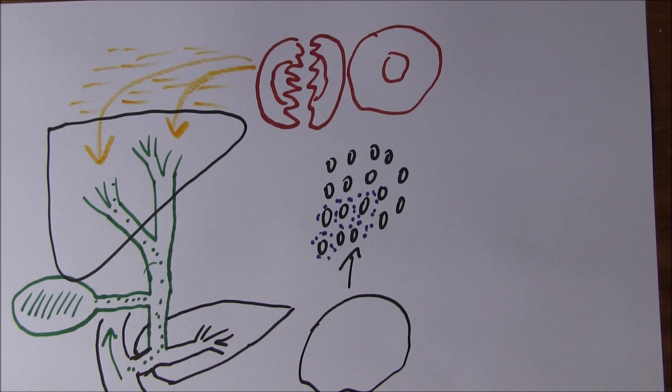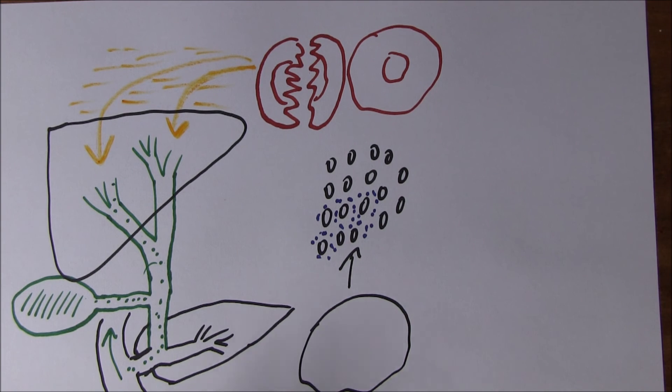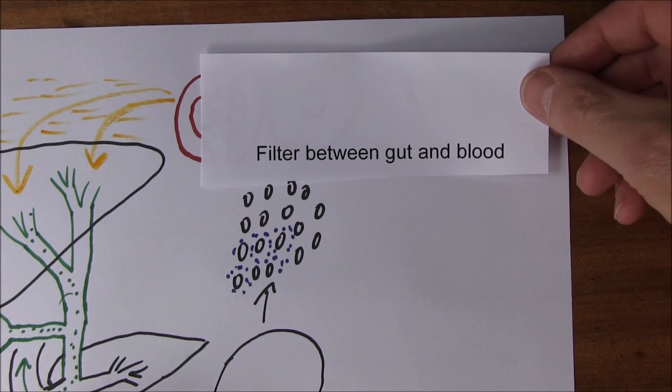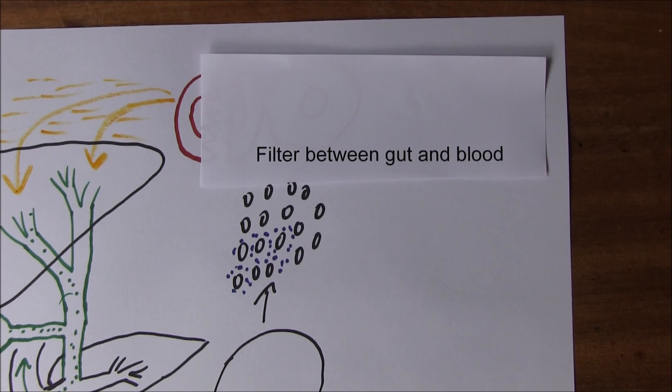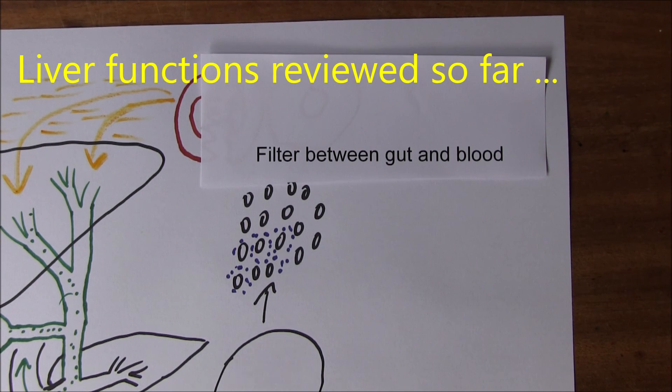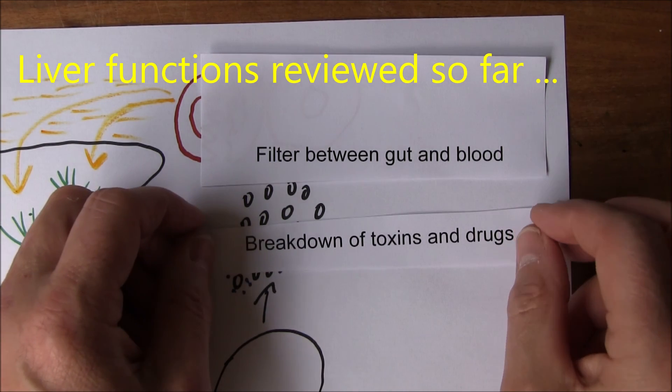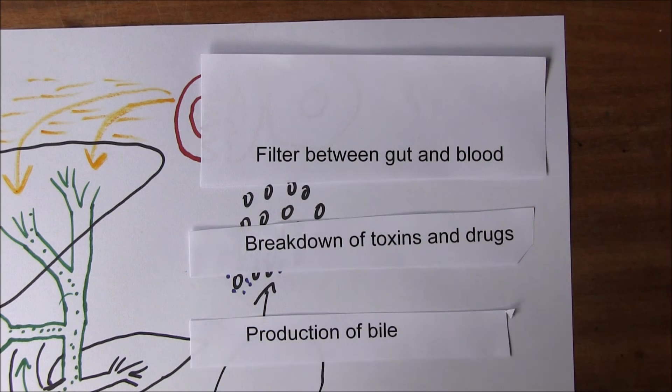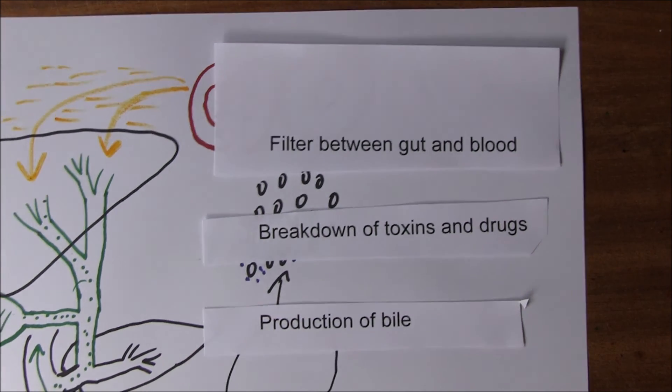So we've seen three important functions already: it's a filter between the gut and the blood, it's going to break down toxins and drugs, and it's going to be producing bile from leftover bilirubin from the breakdown of hemoglobin in red blood cells.